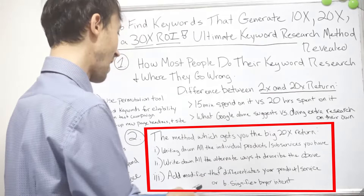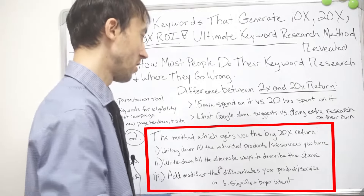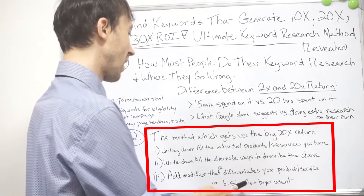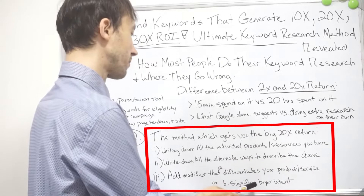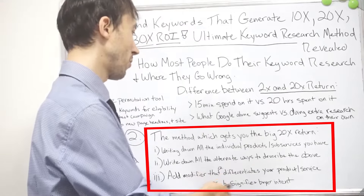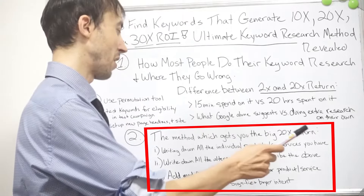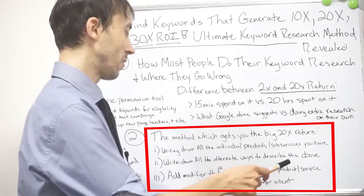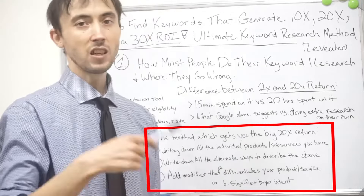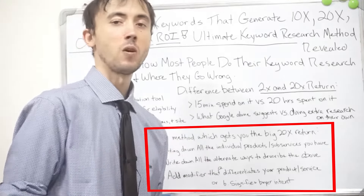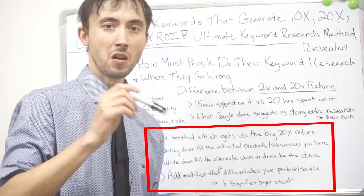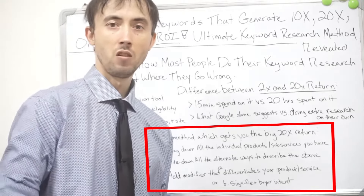The third step is: add a modifier that either differentiates your product and service from everything else, or signifies buyer intent — one or the other. So once you find the keyword like 'RJ12 paperwork compliance automation tool,' you pick apart the different parts of the keyword. What are synonyms of 'tool'? Service, what else? And so on. Each individual part of the phrase that you find on SpyFu or wherever, you're actually digging into each individual word in there.